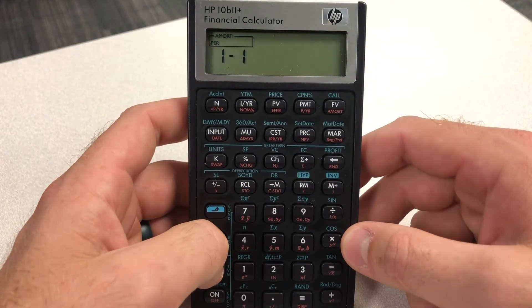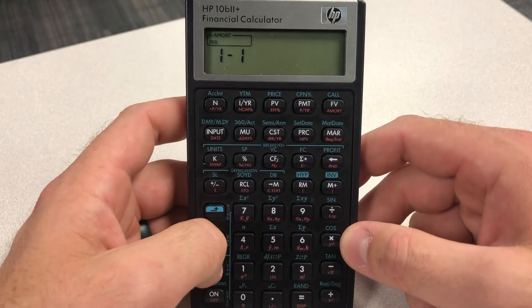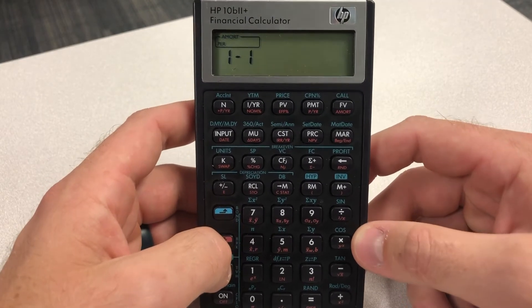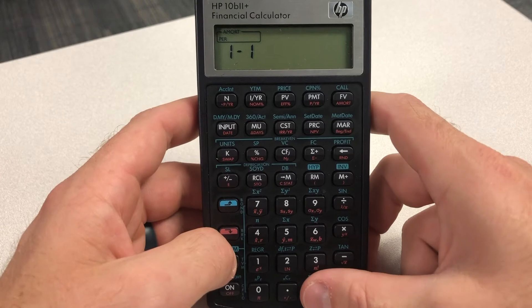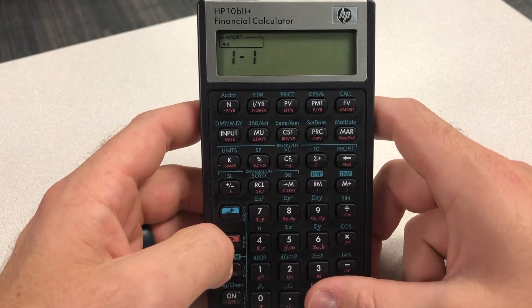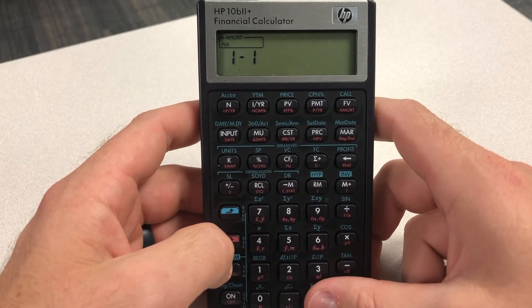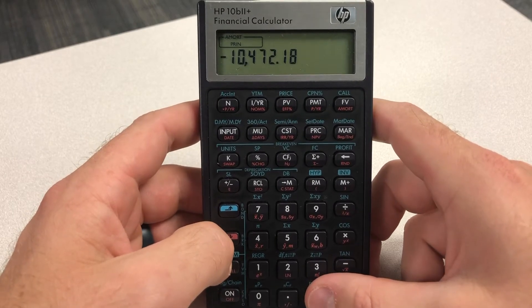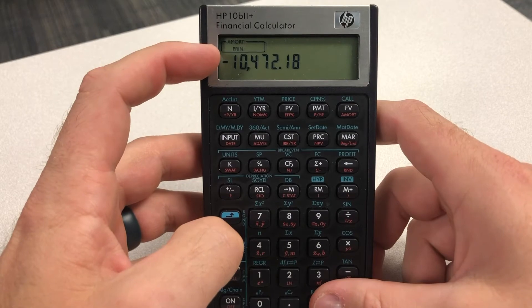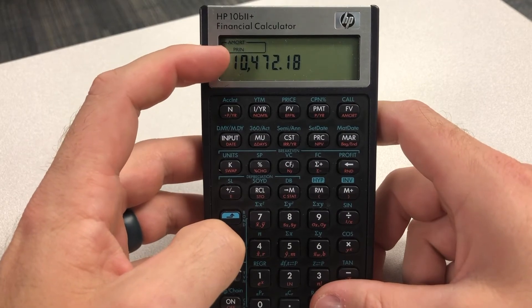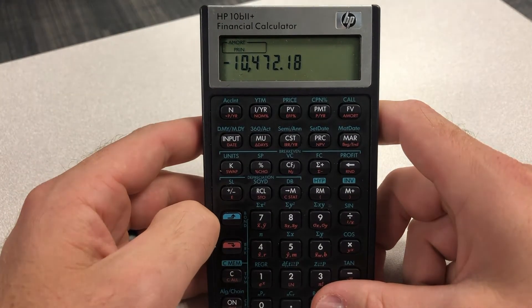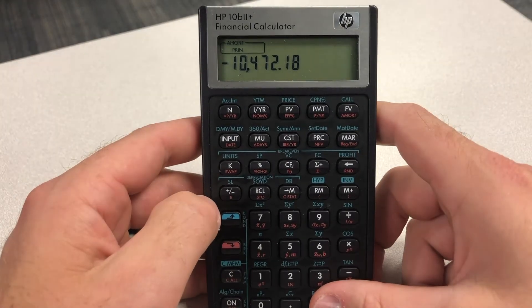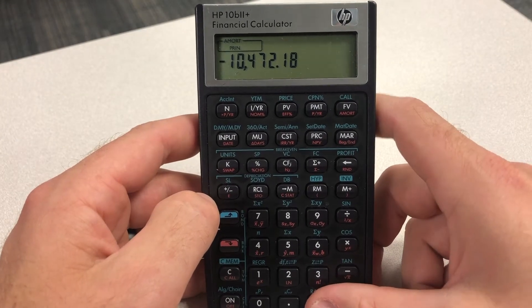So you see one-to-one. What that means is that is all principal and interest paid within that period. So then what we're going to hit after we have the correct periods we want, so we just want year one, we're going to hit equals. And you can see here now this amortization box shifted, and now it says PRIN, which stands for principal. So the principal that we've paid, this is how much we pay off our loan in year one.